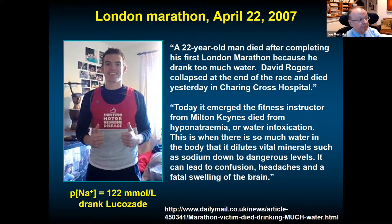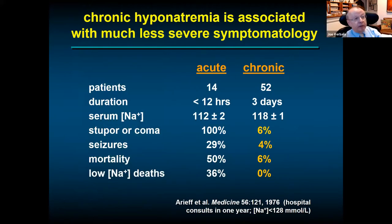Patients with a sodium of 122 in your hospital are not necessarily about to die from brain edema — sodium between 120 and 125 is an emergency only in acute hyponatremia. Chronic hyponatremia is a different disease. In the same hospital, patients hyponatremic for more than three days with severe hyponatremia below 120 had only 6 percent coma and 4 percent seizures, with little hyponatremia-related mortality. The time course fundamentally changes the clinical presentation.